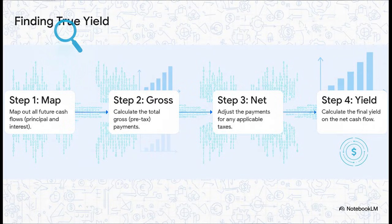And the good news is, you can do this for any bond, just by following our four detective steps. First, map out every single cash flow. Second, calculate the total gross payments. Third, adjust those payments for taxes. And finally, calculate the yield on that net cash flow. That's it. That's the formula for finding the truth.